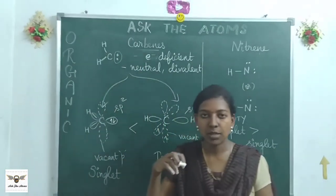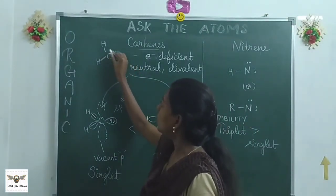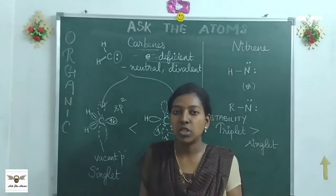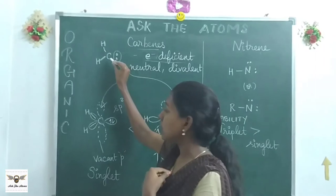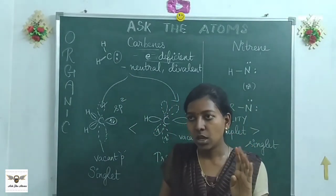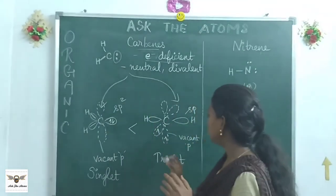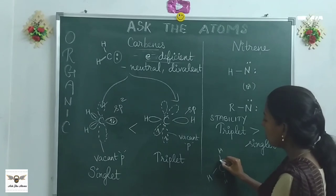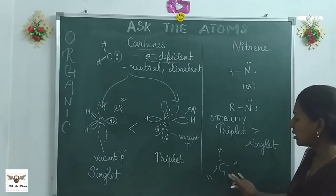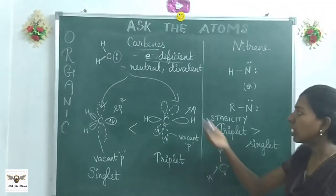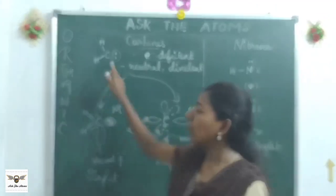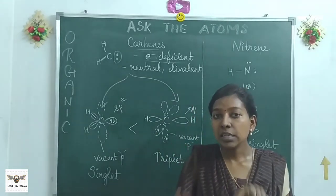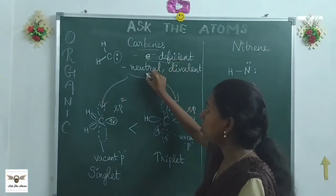When you count the valence electrons around carbene carbon, there are only six electrons, making it electron-deficient even though it carries no charge. Carbon normally has four valence electrons. Imagine in methane, two hydrogens escape with their electrons — what remains is a carbene. Carbene does not carry a charge because carbon neither gains nor loses electrons; it simply holds a lone pair while being in a six-electron valence shell. It is neutral and divalent.